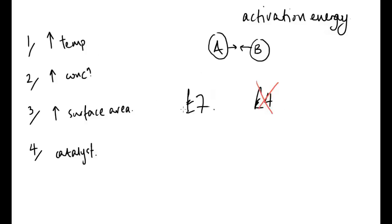With temperature, increasing it is like giving someone more money. I had four pounds but now I've got eight pounds. When I go to the desk — which is the collision point — the ticket costs seven pounds and I have eight. I have met the requirements for entering the cinema; I've met the activation energy. I have enough money and I can go in. There is a successful reaction.